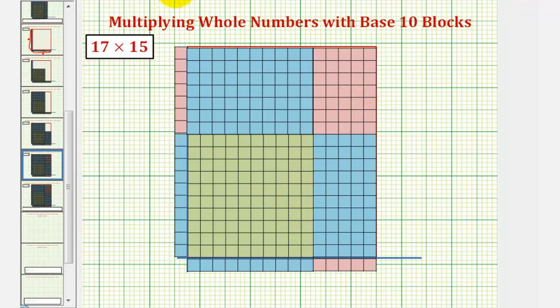Now let's find the total area. Our 100 block gives us an area of 100. Here we have seven 10 blocks, or seven times 10, that would be 70. Here we have five 10 blocks, five times 10 is 50.